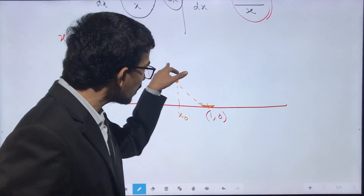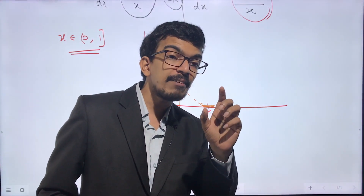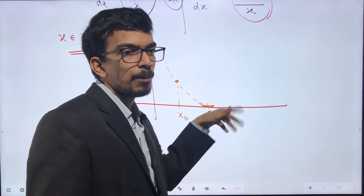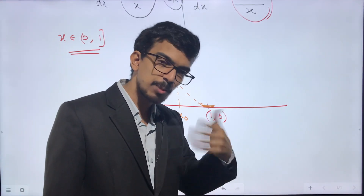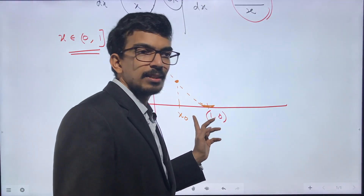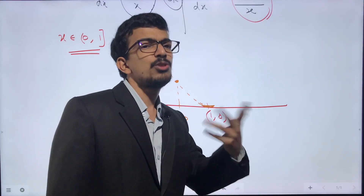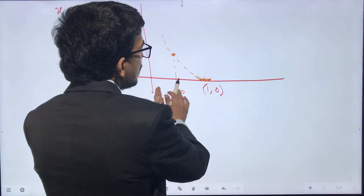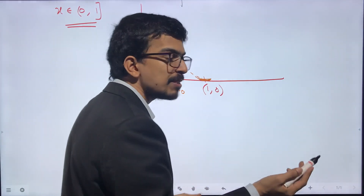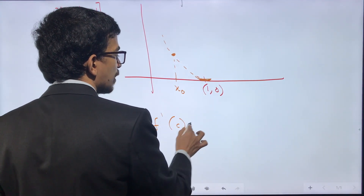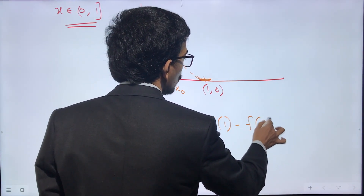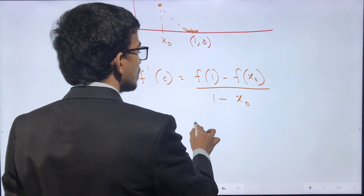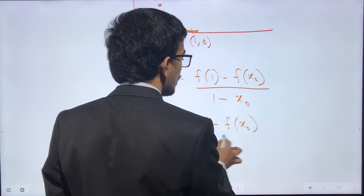As x goes from x₀ to 1, the value of the function is decreasing, so the derivative has to be negative. This can also be confirmed using Lagrange's Mean Value Theorem: for some c between x₀ and 1, f'(c) = (f(1) − f(x₀))/(1 − x₀) = (0 − f(x₀))/(1 − x₀) = −f(x₀)/(1 − x₀).